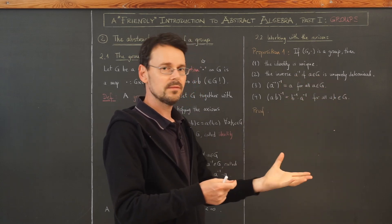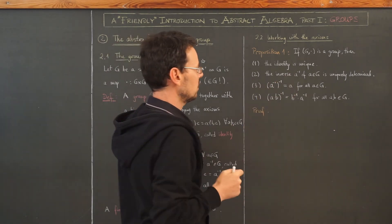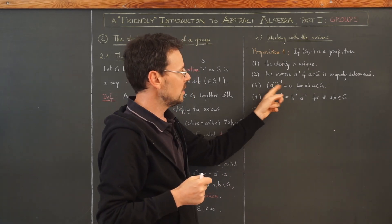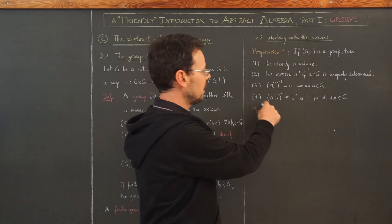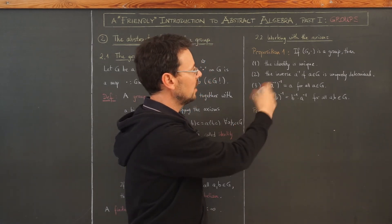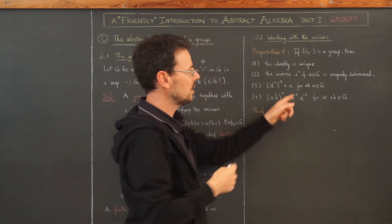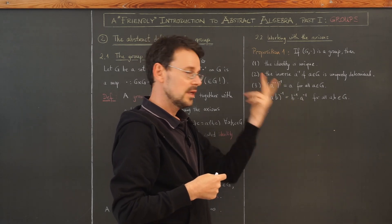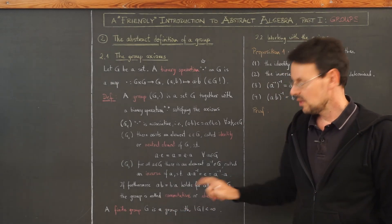If I found one inverse, that's enough — there can't be a second one that differs from it. Third, if I take the inverse of the inverse of a, I end up with a again. Finally, the inverse of the composition a·b — beware — is not a⁻¹·b⁻¹, but b⁻¹·a⁻¹. The order is switched around.